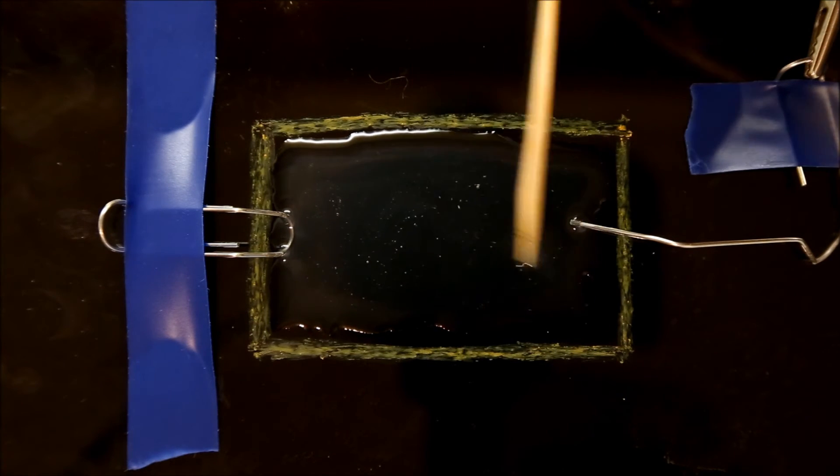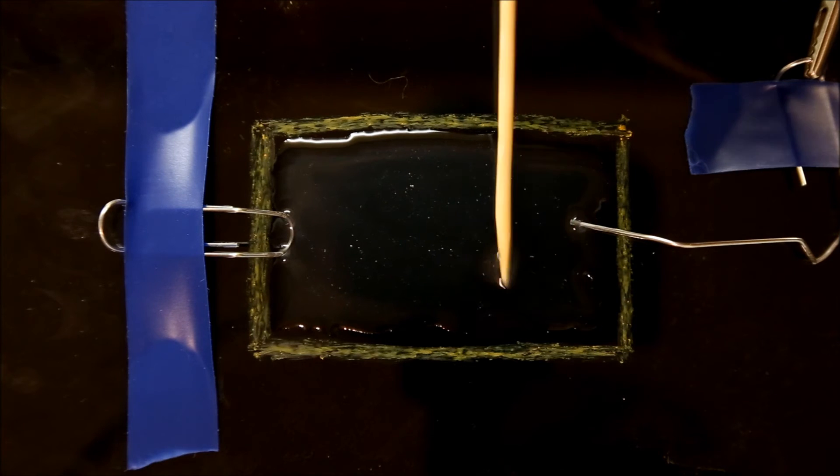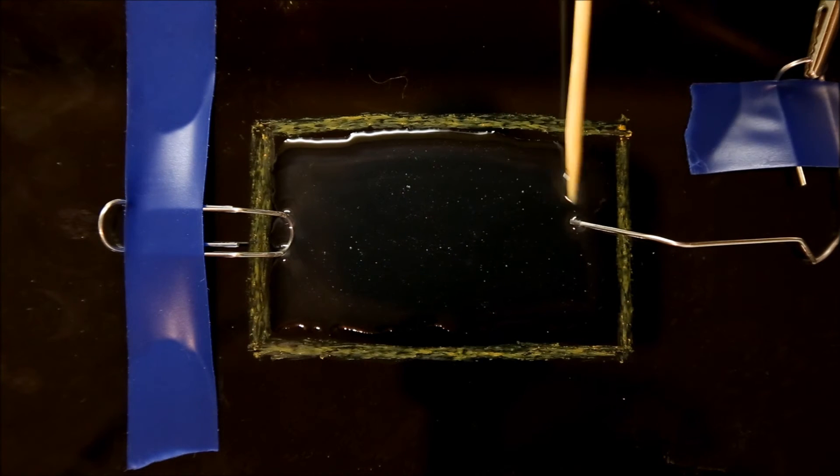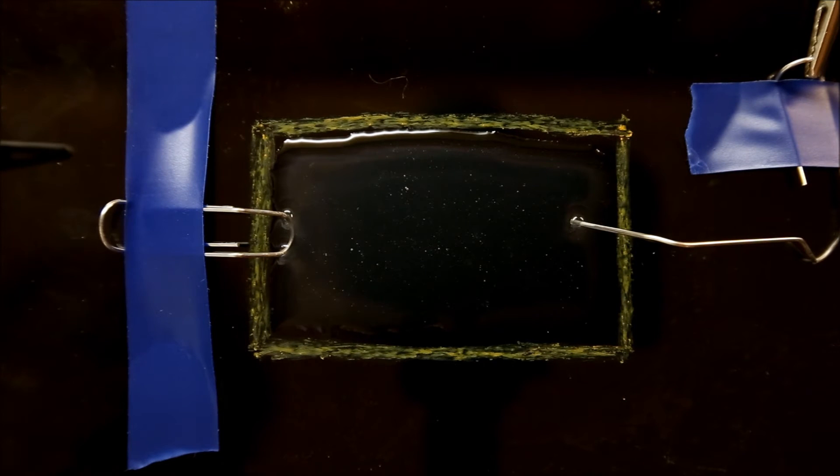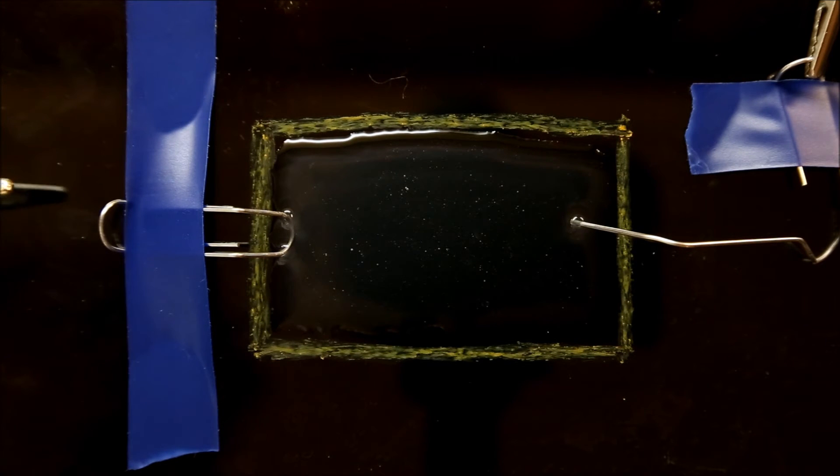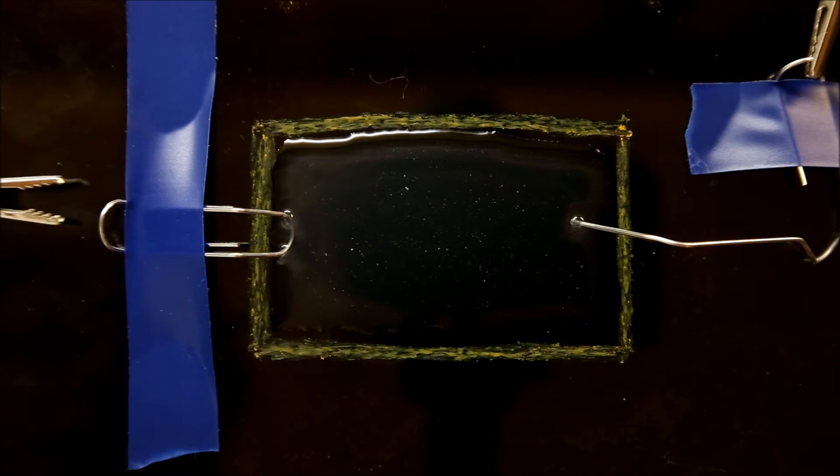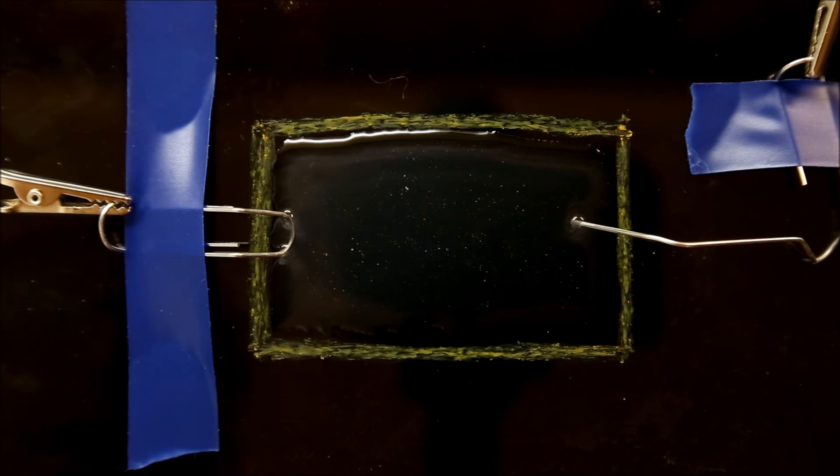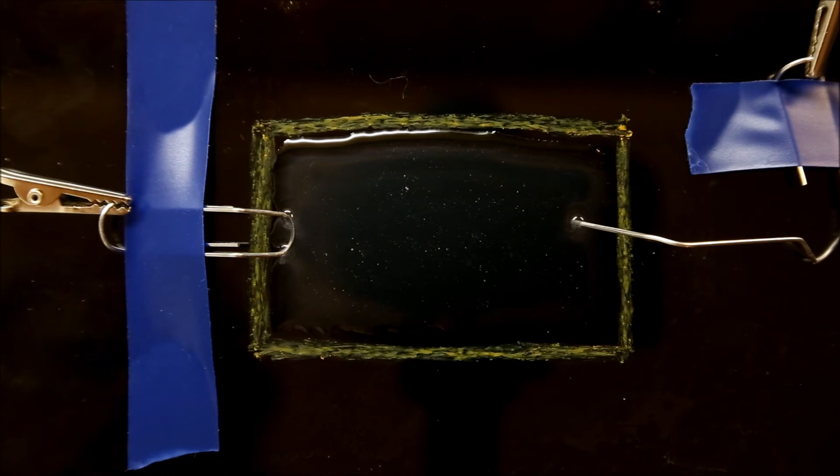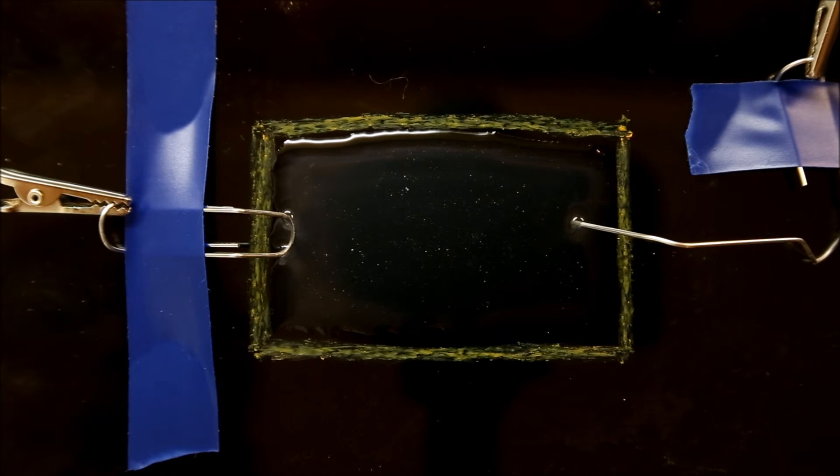When you're spreading it, make sure that both electrodes are in good contact with it. Once the solution is spread out, plug your power supply in and connect the clip lead, and you should start to see crystals growing fairly quickly.